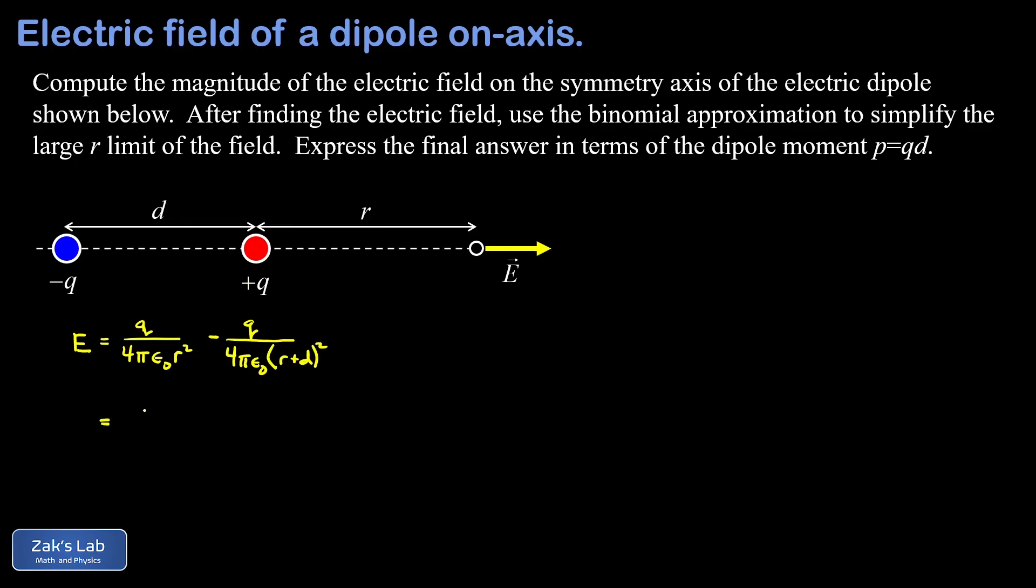So we can factor the q over four pi epsilon zero out of this, and this leaves us with a q over four pi epsilon zero multiplied by this quantity one over r squared minus one over r plus d quantity squared. So that's actually one way to write the total electric field at this observation point, but of course we want to do some more work with it.